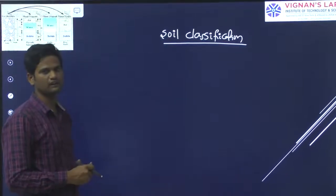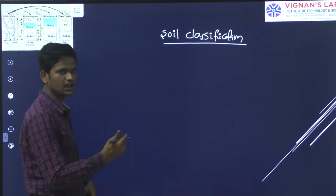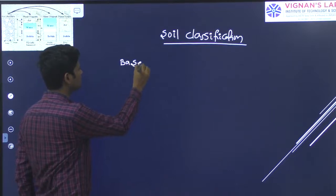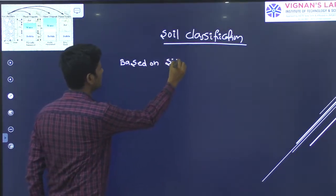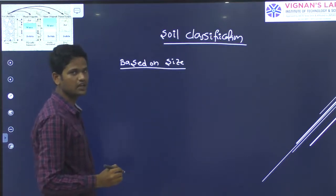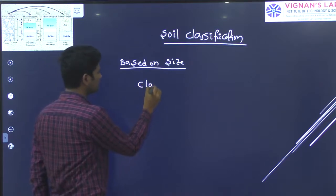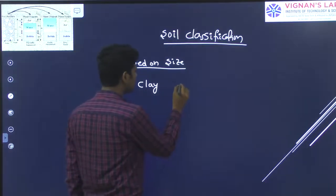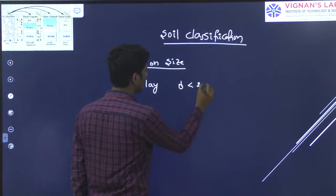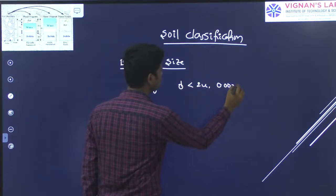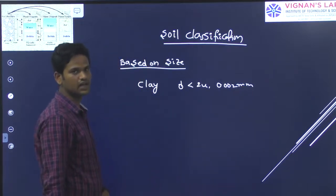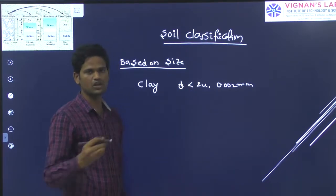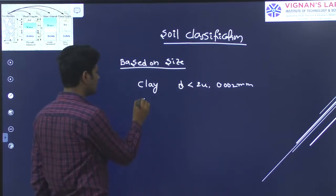Coming to soil classification, we have different types. The soil classification based on size: based on the size of the soil mass we have different types. First, the individual size of the particle mass. Coming to the type of the soil mass, we have clay size particles. This clay size soil mass, which we call clay, is when the soil mass has a size less than 2 microns, or particles having a size of 0.002 mm.